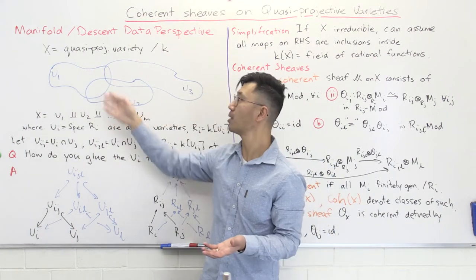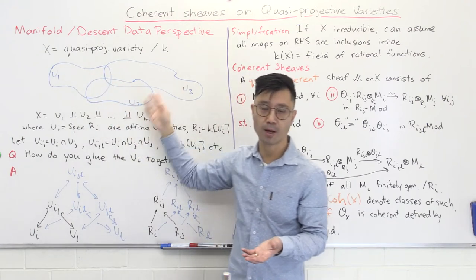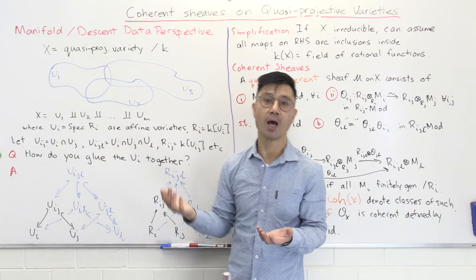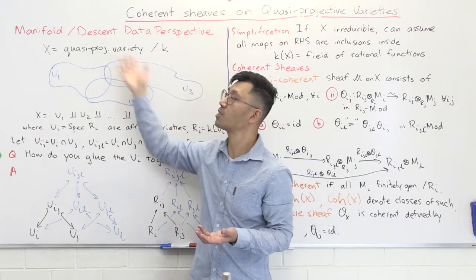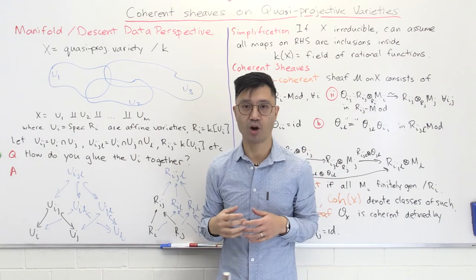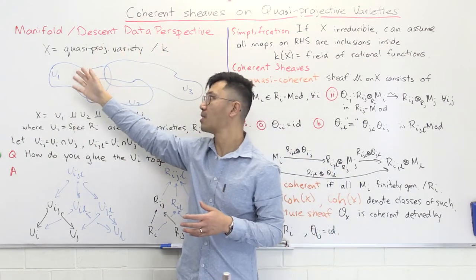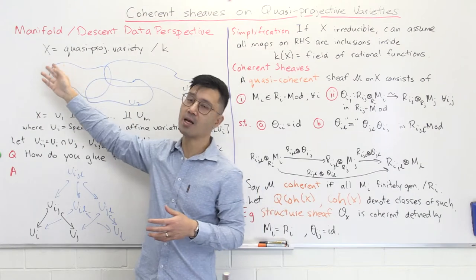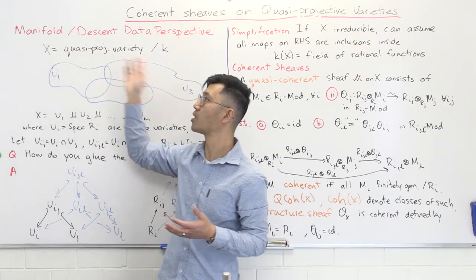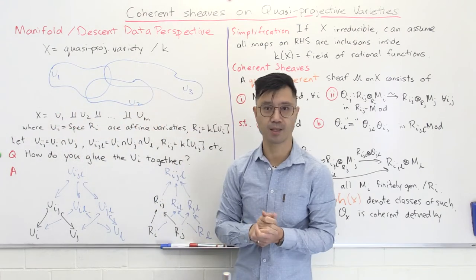A quasi-projective variety has an open cover where each of the open sets in this open cover is actually an affine variety. We can think of this quasi-projective variety as built by gluing these affine varieties together. This setup allows you to talk about coherent sheaves on not just a quasi-projective variety, but schemes which arise in this way — it's quite a general sort of setup.